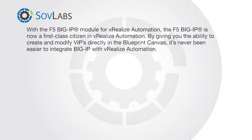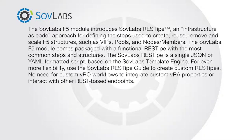By giving you the ability to create and modify VIPs directly in the Blueprint Canvas, it's never been easier to integrate Big IP with vRealize Automation. The SovLabs F5 Module introduces SovLabs RestiP — an infrastructure-as-code approach for defining the steps used to create, reuse, remove, and scale F5 structures such as VIPs, pools, and nodes and members. The module comes packaged with a functional RestiP covering the most common steps and structures, formatted as a single JSON or YAML script based on the SovLabs template engine. For even more flexibility, use the SovLabs RestiP guide to create custom RestiPs — no need for custom VRO workflows to integrate custom VRA properties or interact with other REST-based endpoints.